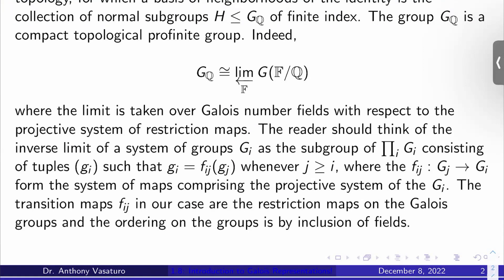is a subgroup of the product of all the groups that consists of all of the tuples with i-th entry G_i, such that G_i is f_ij of G_j whenever j is at least i. And what are these f_ijs? They're the projective system of maps.